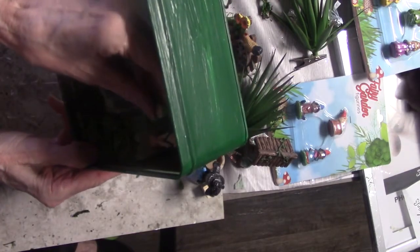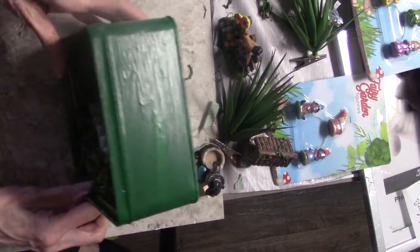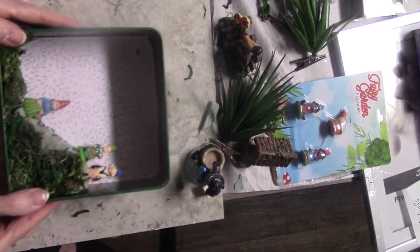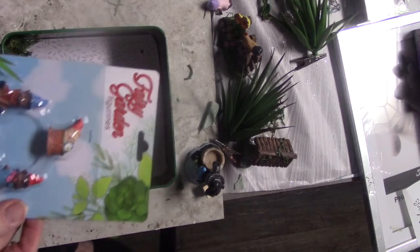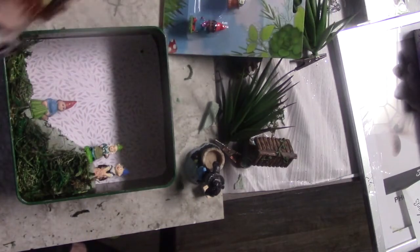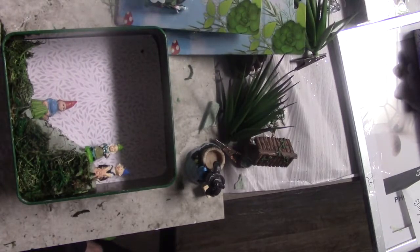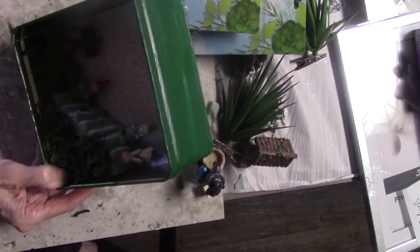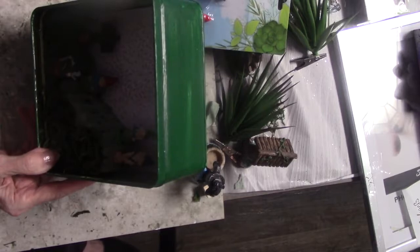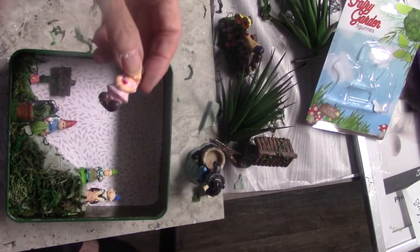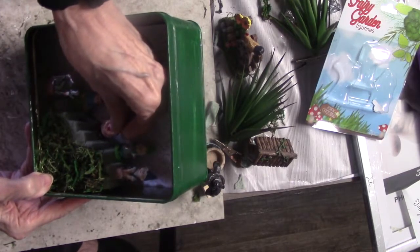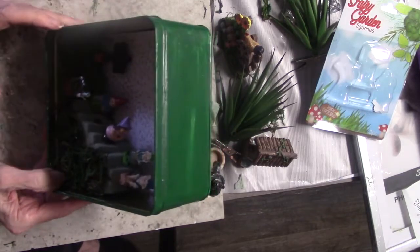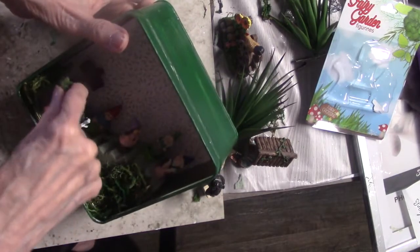This will be cute for one of your kids, like a nightlight. Because I'm going to put lights in it. That's why you put the hole in the back of it. So, these are all so cute. So, you just pick out the ones that you like and you're going to glue them to the inside of the box.